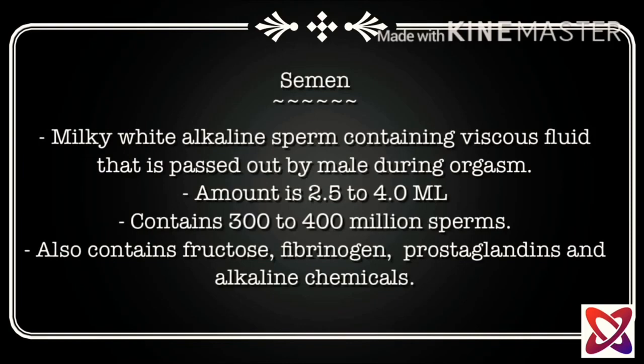That covers all eight components of the male reproductive system. Now let's move ahead to discuss semen and sperm. Semen is the milky white, alkaline, sperm-containing viscous fluid passed out by the male during orgasm. Its amount is 2.5 to 4.0 ml and it contains 300 to 400 million sperm. It also contains fructose, fibrinogen, prostaglandins, and alkaline chemicals.